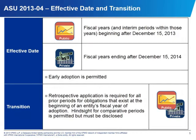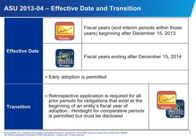The update will be effective for public entities in fiscal years and interim periods within those years beginning after December 15, 2013, and will be effective for non-public entities in fiscal years ending after December 15, 2014. Early adoption will be permitted, and the guidance will be applied on a retrospective basis for obligations that exist at the beginning of an entity's fiscal year of adoption. Hindsight for comparative periods is permitted, but it must be disclosed if it is utilized. Additional disclosures about joint and several liability arrangements will be required, and an entity can disclose a single obligation or group similar obligations together.